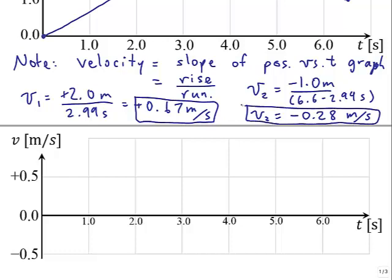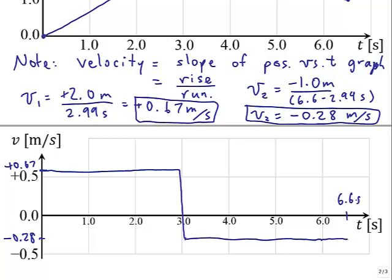So now we're ready to plot those two velocities on a velocity versus time graph. So plus 0.67 extends out to about just before three seconds. And negative 0.28 starts at three seconds. So it drops down and goes out all the way to 6.6 seconds. And so it's a straight line graph, and then a quick change in velocity, and then another straight line graph.